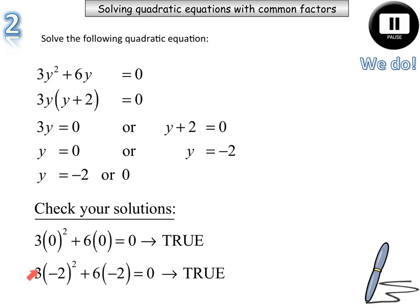Next one, 3 times 4, so that's 12, plus 6 lots of negative 2, that's negative 12. 12 take away 12 is 0, so that is true. So here are our two solutions.